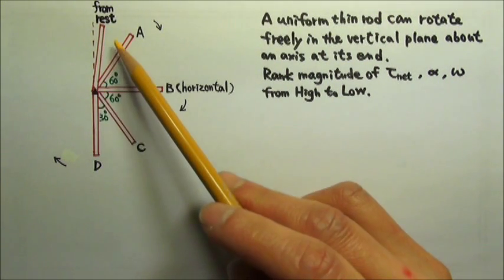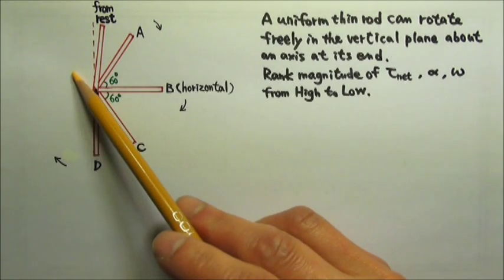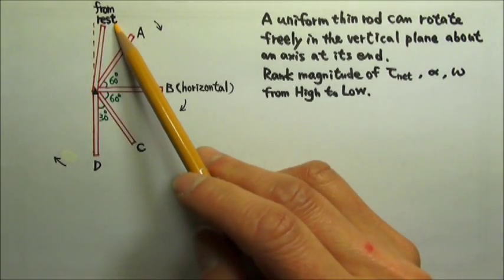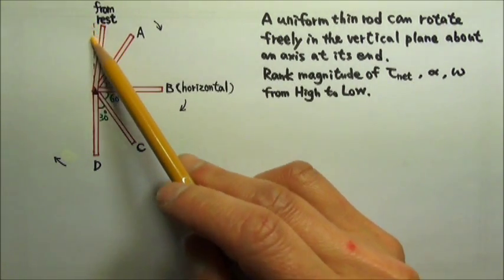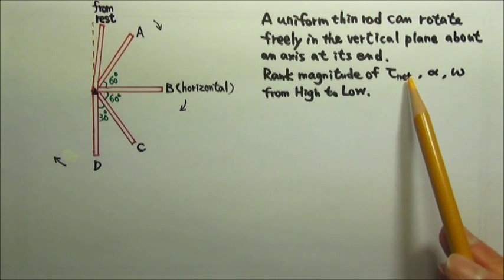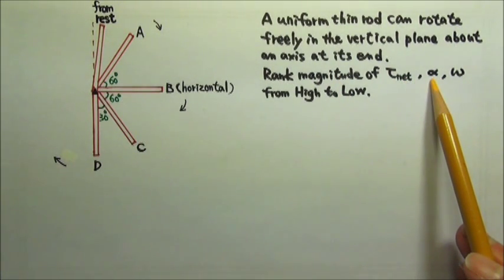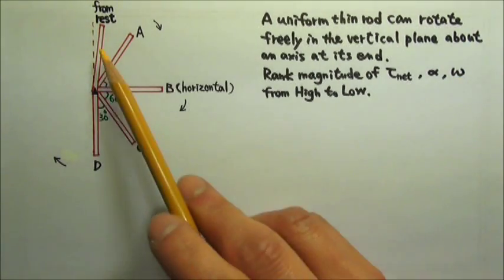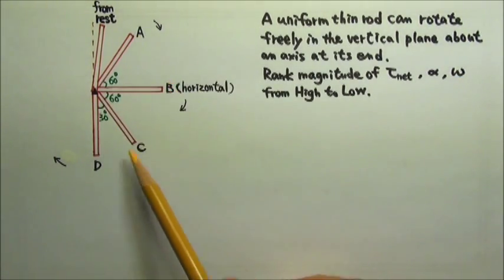A uniform thin rod can rotate freely in the vertical plane about an axis at its end. It is released from rest at a small angle to the vertical. Rank from high to low the magnitude of the net torque on the rod, the angular acceleration of the rod, and the angular velocity of the rod when the rod reaches these four positions.